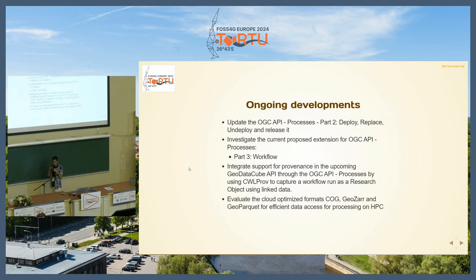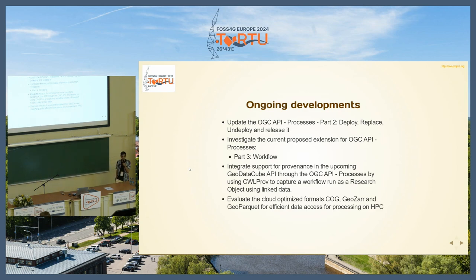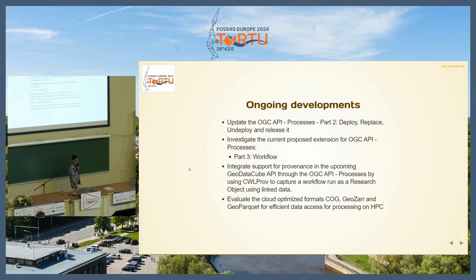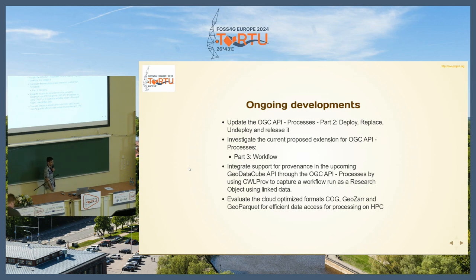Regarding ongoing development and goals for this year: we are willing to get OGC API Processes Part 2 — which is in very good shape — validated by the OAB. We are also willing to investigate the proposed Part 3 pass-free workflow extension, though it may contain too many things and possibly needs to be split into multiple parts. Additionally, we plan to integrate support for CWL prov to preserve provenance and store workflow runs as research objects using linked data, and to evaluate cloud-optimized formats for processing data on HPC.